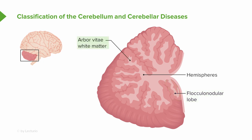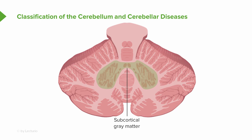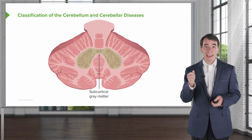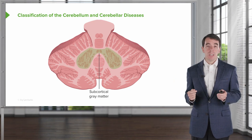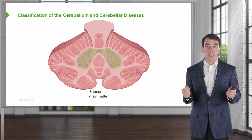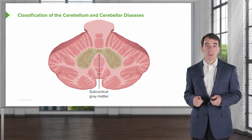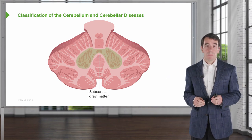Beneath the lobes is the arbor vitae — the subcortical white matter of the cerebellum — which connects the cerebellum to the brain and to various places in the spinal cord. Going deeper, just as the cortex has deep subcortical gray matter, the cerebellum also has deep subcortical gray matter structures. These serve as the output relay for the cerebellum: information enters the hemispheres, vermis, and flocculonodular lobe; the cerebellum processes and coordinates it; then sends it to the deep nuclei to be relayed back to the brain and spinal cord to coordinate head movement, eye movement, and other functions.